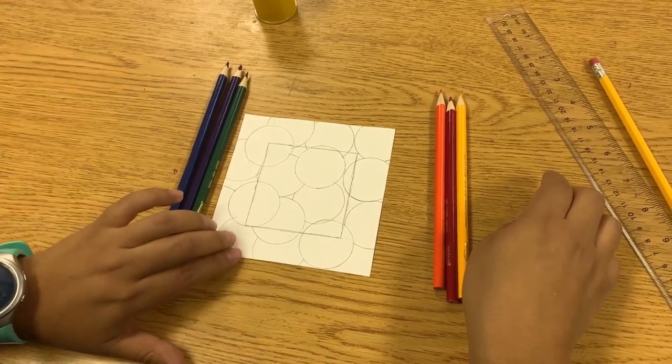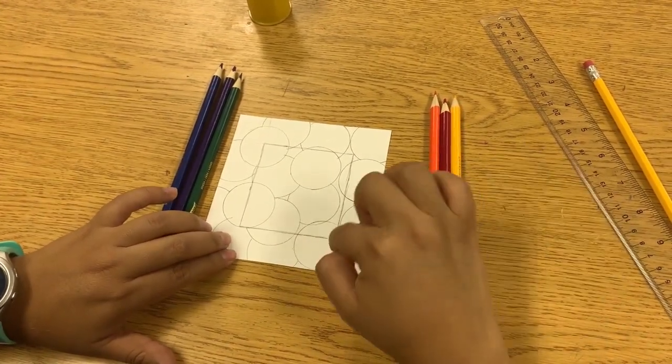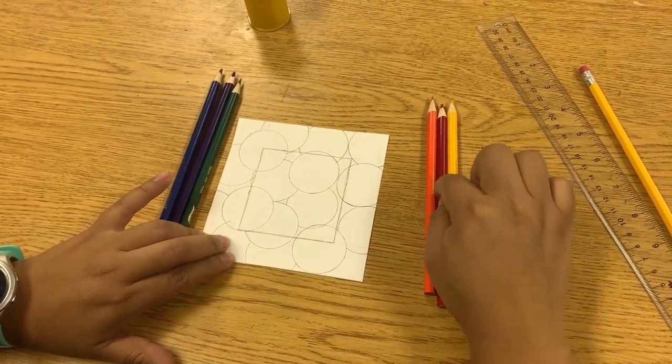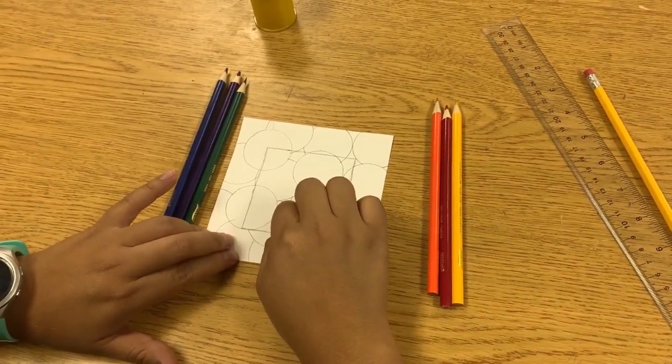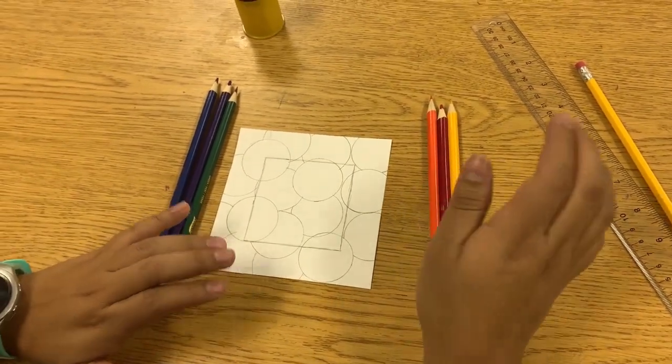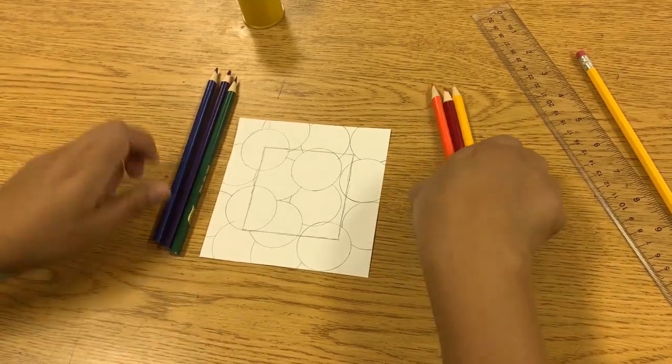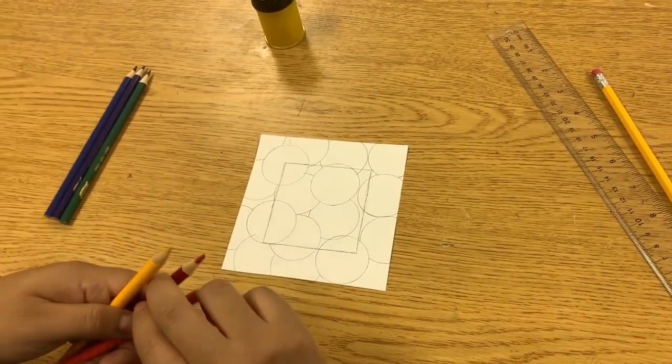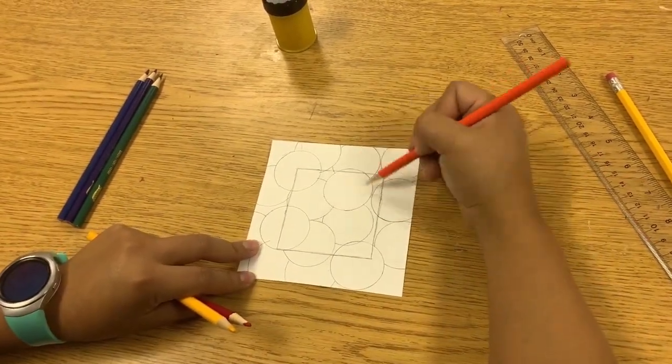I'm going to decide that my cool colors are going to go on the outside of my square and my warm colors are going to go on the inside. Now so that you're not confused, I suggest working warm colors at one time, cool colors on another time. So I'm going to start with my warm and I'm going to start coloring in my circles.